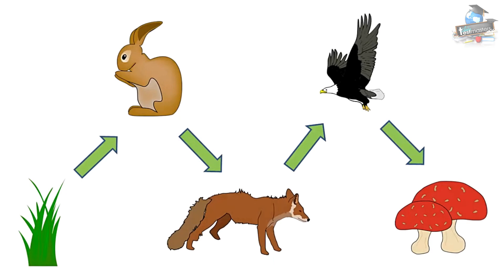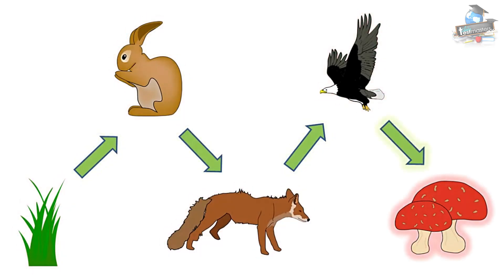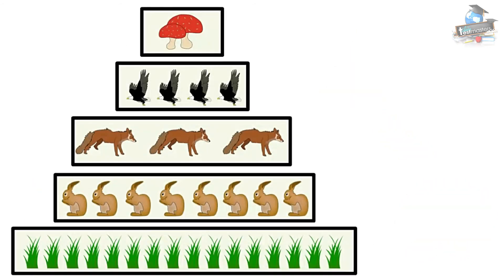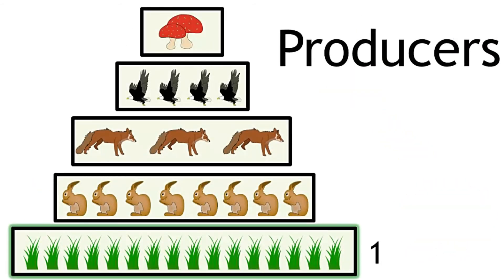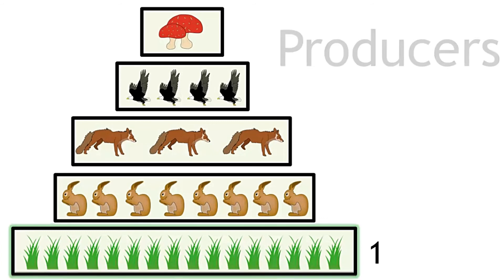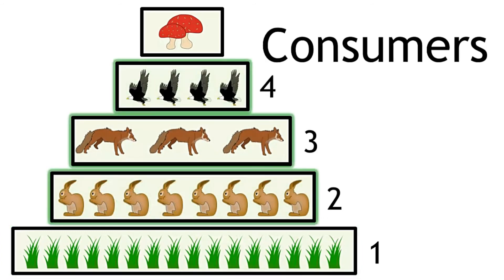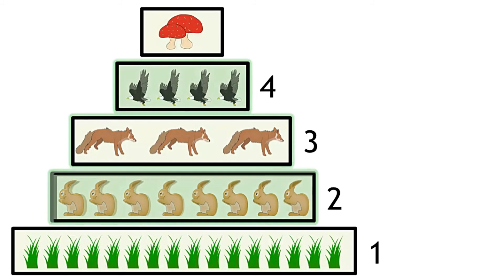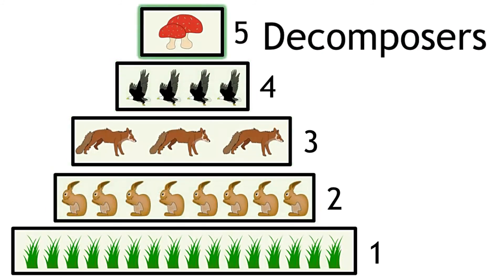To summarise, trophic levels are the number of steps an organism is within a food chain. The first trophic level is usually the green plants, the producers. And as you go up a trophic level along a food chain of an ecosystem, you move on to the consumers, and finally the decomposers.